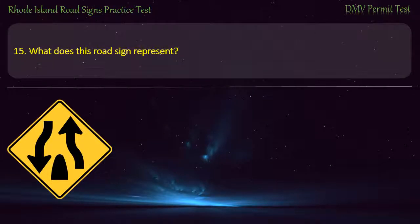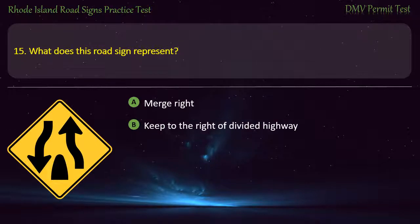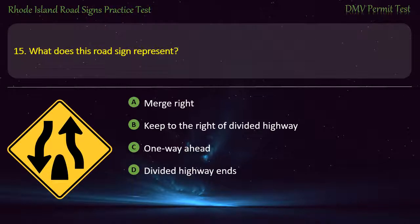Question 15. What does this road sign represent? Merge right, keep to the right of divided highway, one way ahead, divided highway ends. Answer: Divided highway ends.